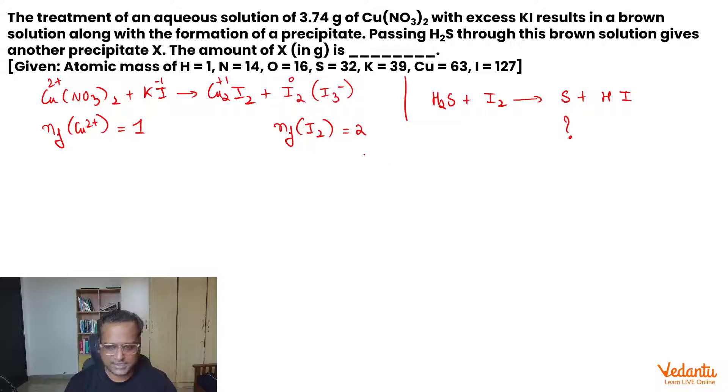This was the first reaction analysis. Now, let's move ahead to the second one. What is the n-factor for I₂ in the second reaction? The n-factor for I₂ in the second reaction is also 2. Why? Because it goes from 0 to -1 and there are 2 iodine atoms involved.